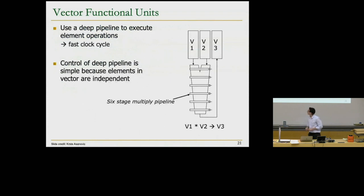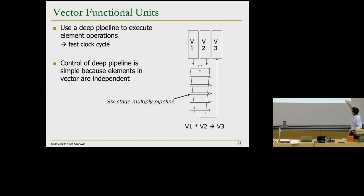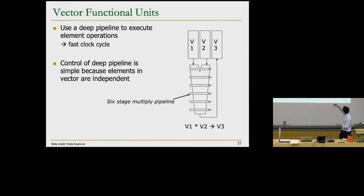Vector processors have deep pipelined functional units. The input operands are in V1 and V2, and results go to V3. Each of V1, V2, V3 is divided into slots holding individual M-bit operands. In each cycle we start executing one multiplication, and in each of the six pipeline stages we have the specific computation for each operand in the input registers.